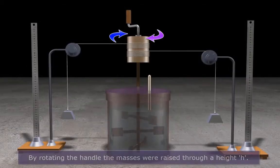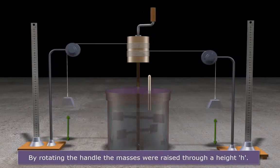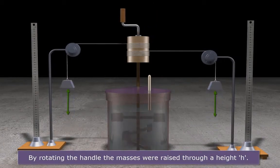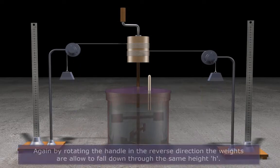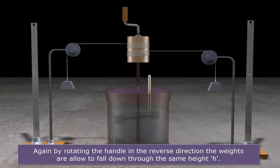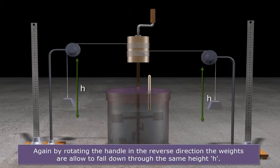By rotating the handle, the masses were raised through a height h. Again, by rotating the handle in the reverse direction, the weights were allowed to fall down through the same height h.